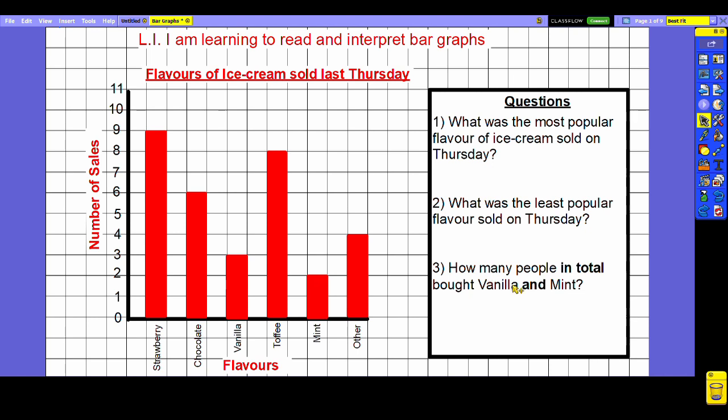Now this third question does require us to do just a little bit of maths. I've highlighted some key words here to help us figure out what process we're going to do. The question is how many people in total bought vanilla and mint. These words should give us a hint that we're having to add the numbers together. We need to figure out how many did vanilla sell, how many did mint sell, and then add them together. Vanilla we can see sold three, whereas mint sold only two, therefore in total together vanilla and mint sold five.